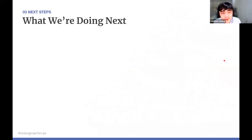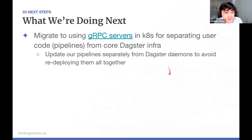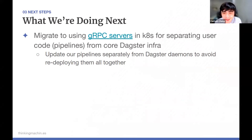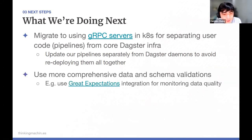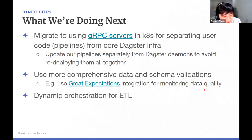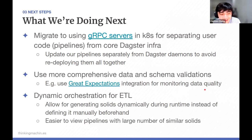For future work, we plan to migrate to using gRPC servers inside Kubernetes to separate pipeline code from core Dagster infrastructure, allowing us to update pipelines separately from Dagster daemons like the scheduler and sensors — a step toward more process isolation in Kubernetes. We're also planning to try more comprehensive data and schema validations using Dagster's integration with Great Expectations for better data quality monitoring. Third, from Dagster 0.11, we want to try out dynamic orchestration for ETL, generating solids dynamically during runtime instead of manually defining them, which also makes them easier to view in the UI.